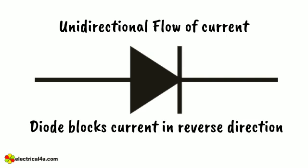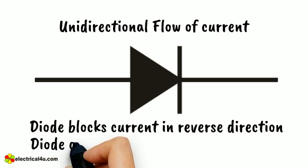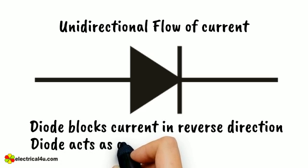Otherwise, the reverse barrier breaks and the voltage at which this breakdown occurs is called reverse breakdown voltage. The diode acts as a valve in electrical and electronic circuits.